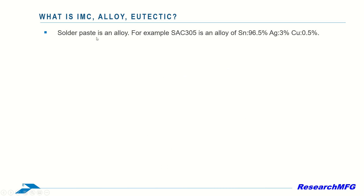Alloy is a term we encounter often in PCB manufacturing. For instance, SAC305 is an alloy comprising 96.5% tin, 3% silver, and 0.5% copper.